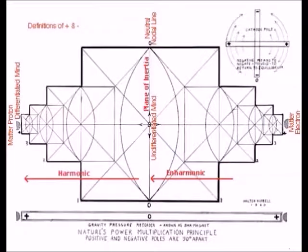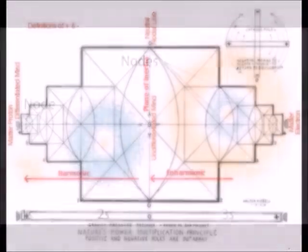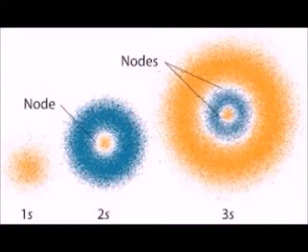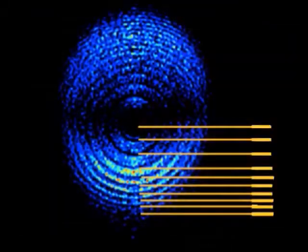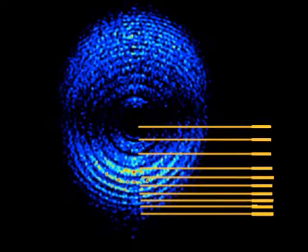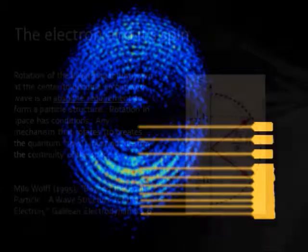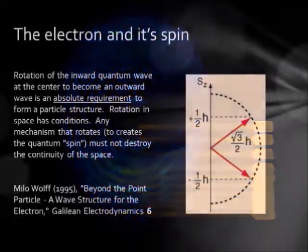But when we started looking closely enough at one electron in a molecule losing energy to another electron somewhere else, we found that it was in bits. This is what Max Planck did in 1900. Planck discovered this.